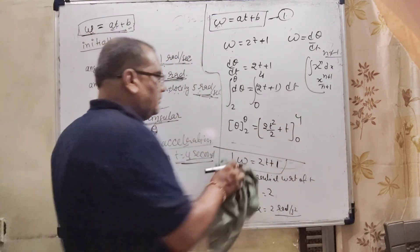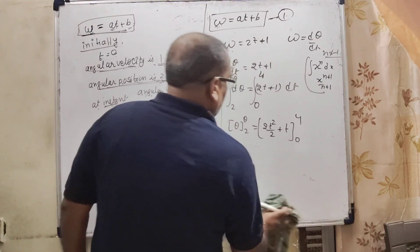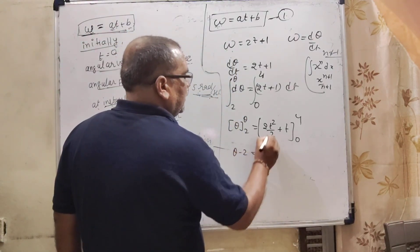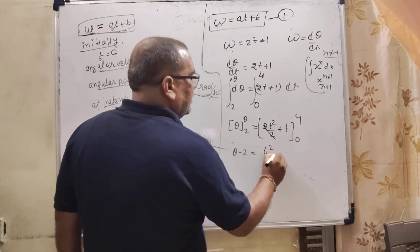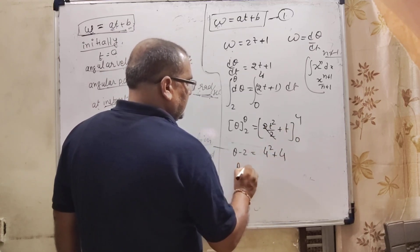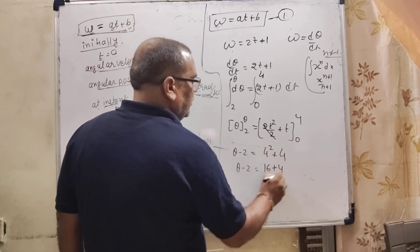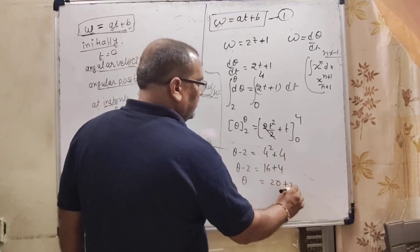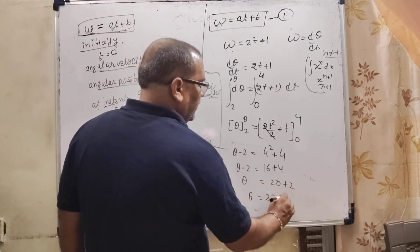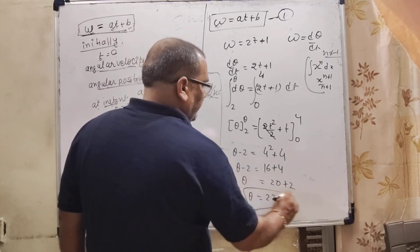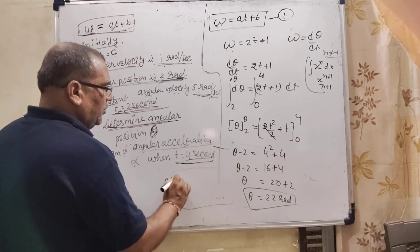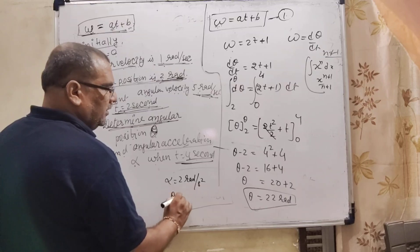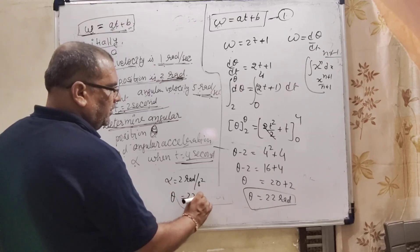Now upper limit that is theta minus 2. 2 to cancel out. 4 square plus 4. Then theta minus 2, 4 square that is 16 plus 4, equals 20. This minus 2 is transposing, becomes plus 2. Theta equal to 22 radian. So here we get the answer alpha equal to 2 radian per second square and theta is equal to 22 radian.